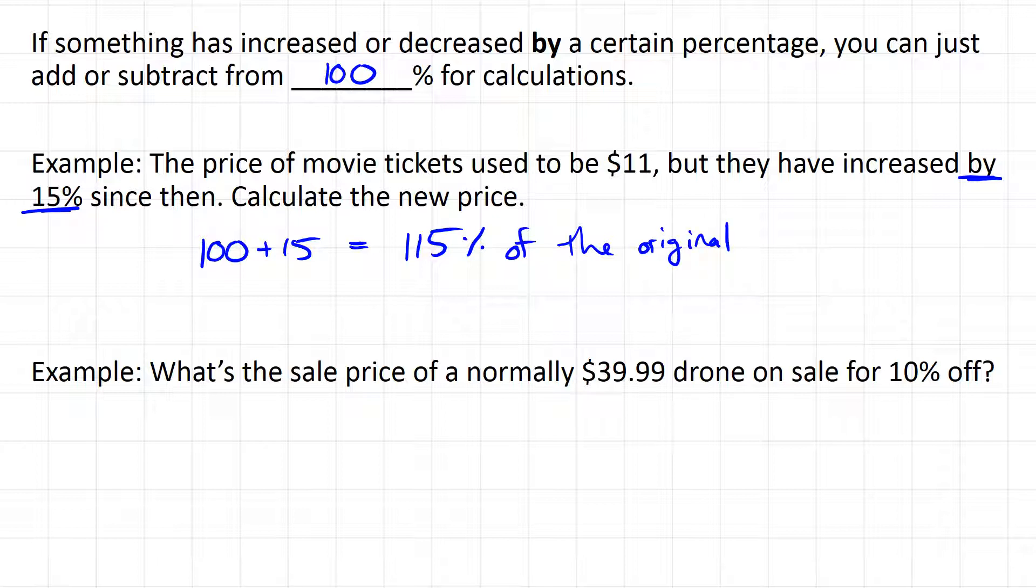So it's increased by 15%. If 100% was the original $11, it's now 115% of that. So turn that into a decimal. That's 1.15 times $11 is $12.65.